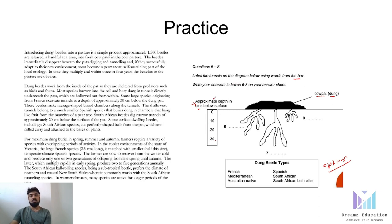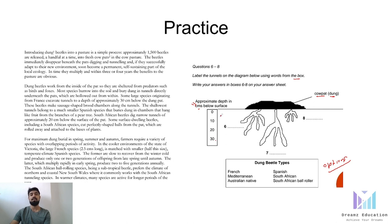Coming back to our diagram completion question — all the answers for this diagram can be found in one paragraph. In this case there are three paragraphs, so it is not necessary that you read all three. It is just enough to read one paragraph in detail. That is why you first locate the information based on what is already given in the diagram. Our keyword here is the approximate depth in centimeters — 10, 20, or 30 centimeters — so we identify which paragraph contains this information.